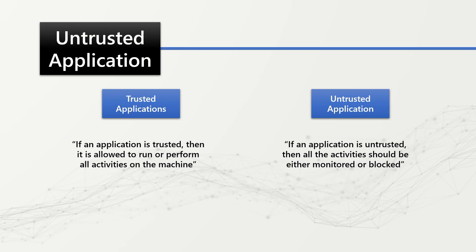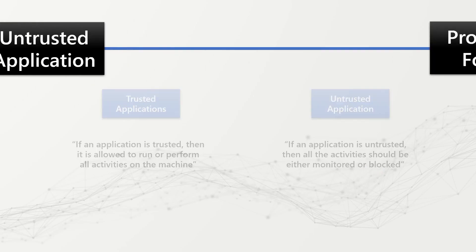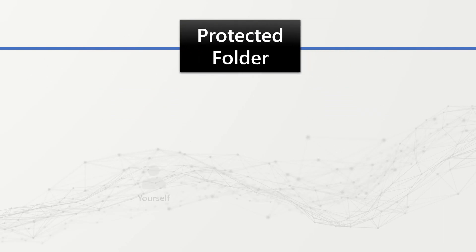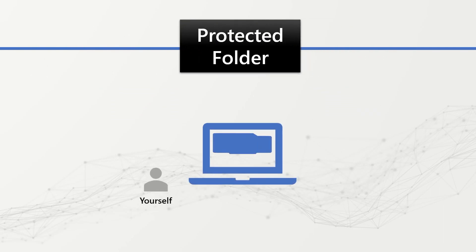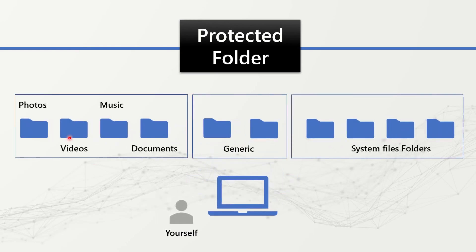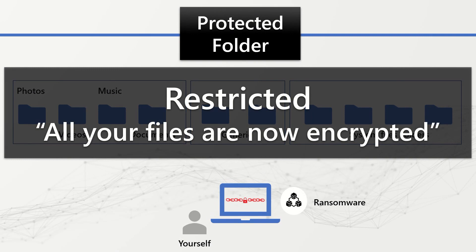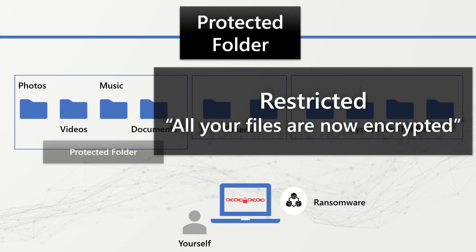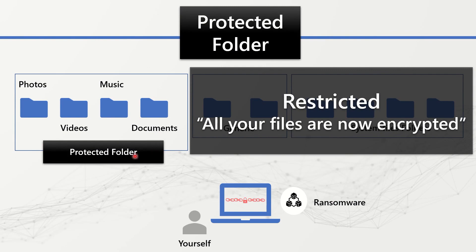The next term is protected folders. Imagine accessing your machine where you use multiple folders, out of which the first few contain all your personal and professional data. If your machine is affected by ransomware, access to your own data will be restricted because all your files are now encrypted. By simply classifying these important folders as protected folders, you can protect your personal data from being encrypted.